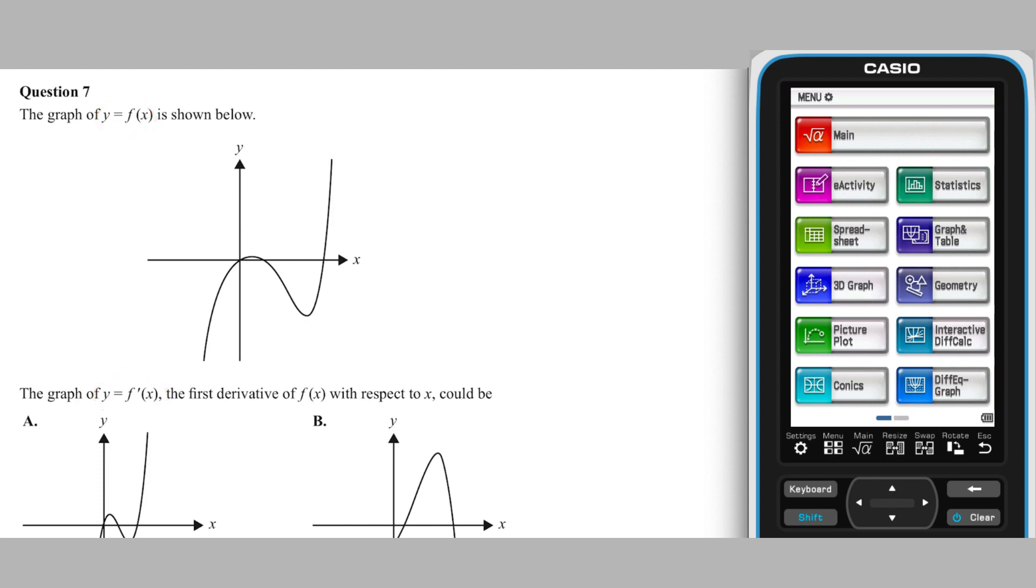My approach to these sorts of questions is to identify features of the graph of y equals f of x that tell us about the graph of y equals f dashed, and then use these features to rule options in or out. The easiest of these features to use are the stationary points of f of x, as these will correspond to the roots of f dashed.